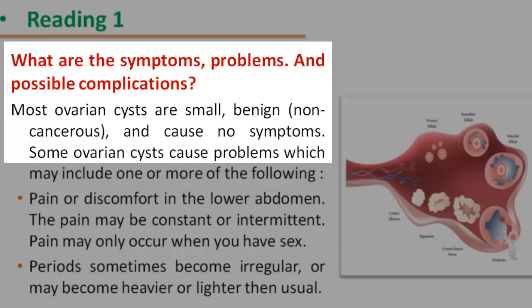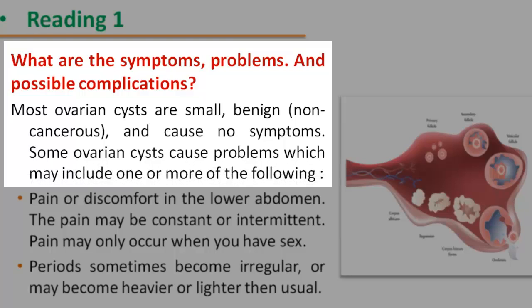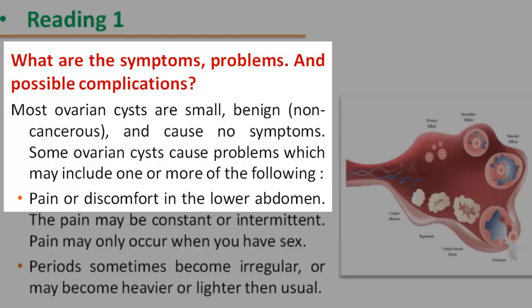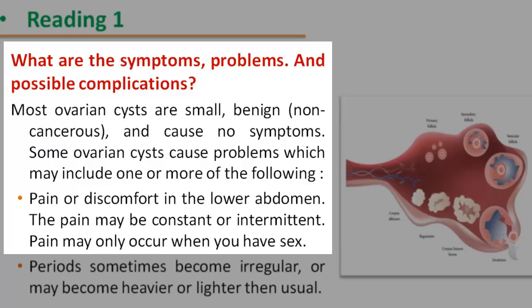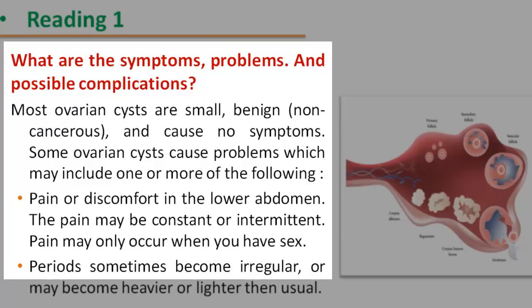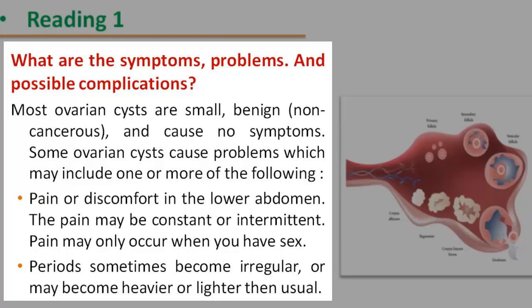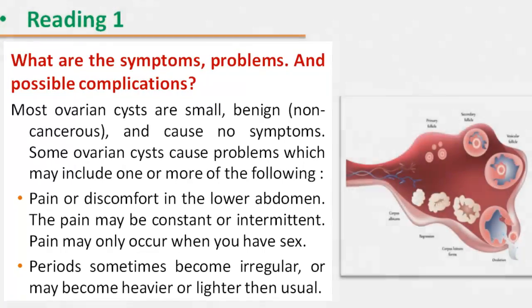Some ovarian cysts cause problems which may include one or more of the following: pain or discomfort in the lower abdomen. The pain may be constant or intermittent. Pain may only occur when you have sex. Periods sometimes become irregular or may become heavier or lighter than usual.